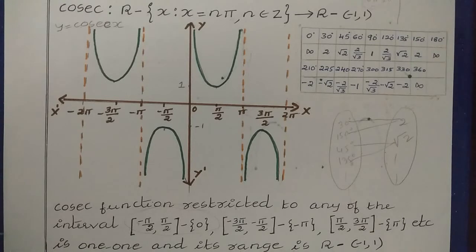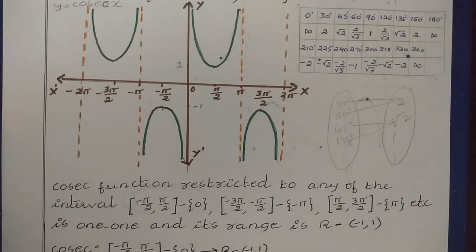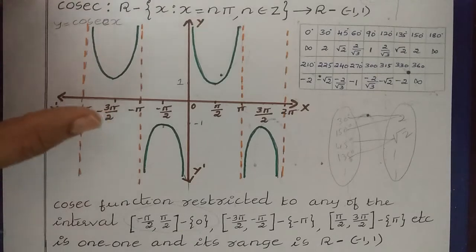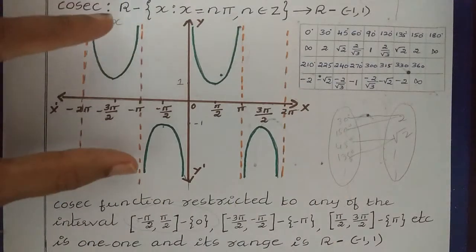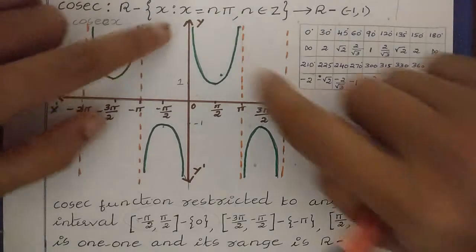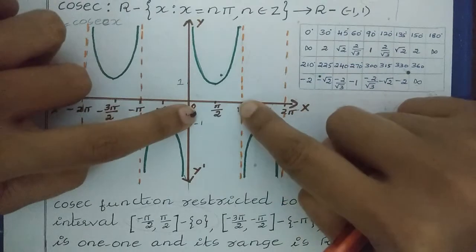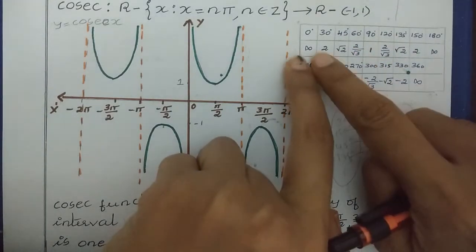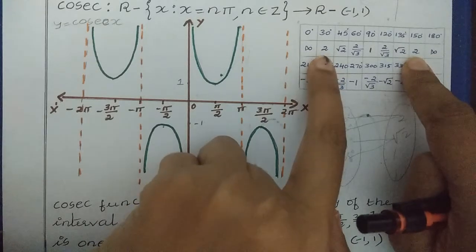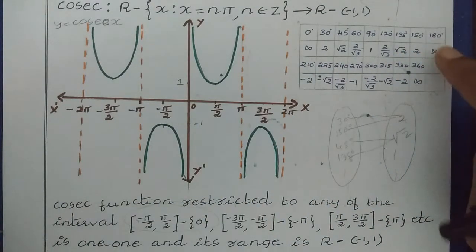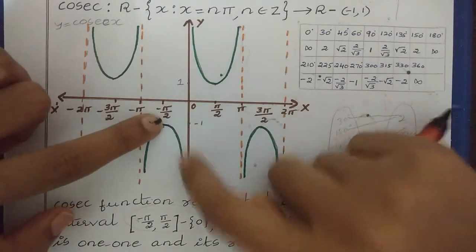That means we can't find the inverse directly. So to find the inverse, we have to make this Cosec Function one-one. To do that, instead of taking all the set of values, we have to consider only a part of the graph — a small part where the Cosec Function is one-one. Let us check at which interval the Cosec Function is one-one. If I take the interval 0 to π, it is not one-one — for 30 degrees and 150 degrees both give 2, so for one image we have two pre-images. That shows it is not one-one, so we can't take this interval.